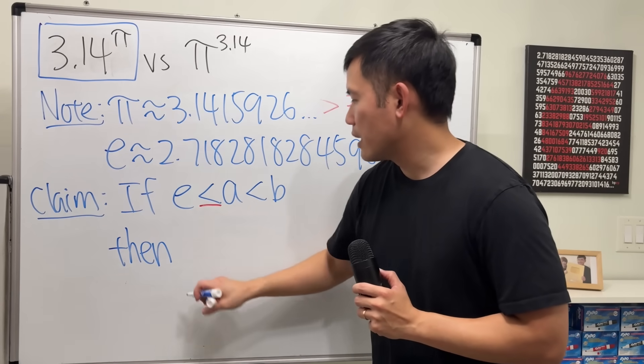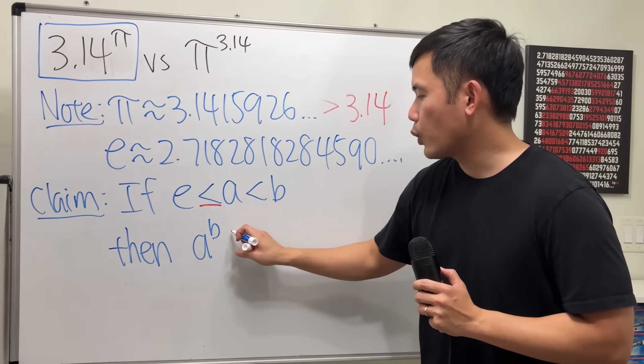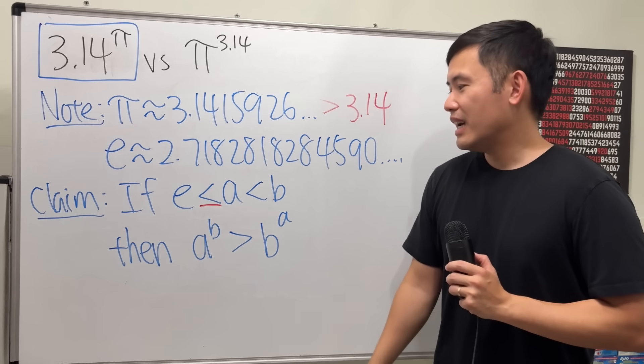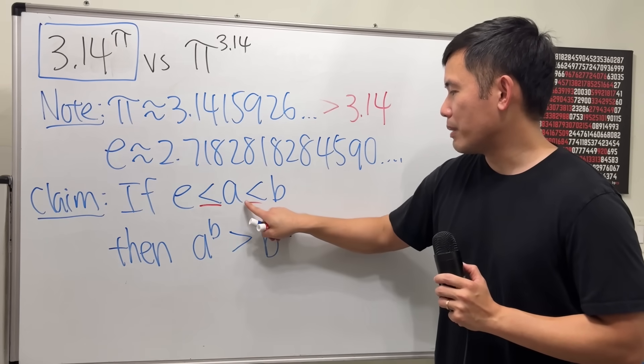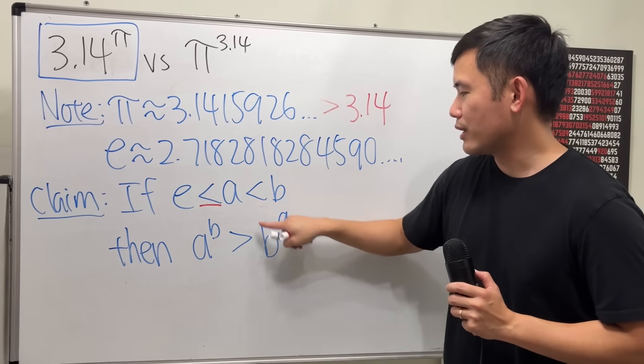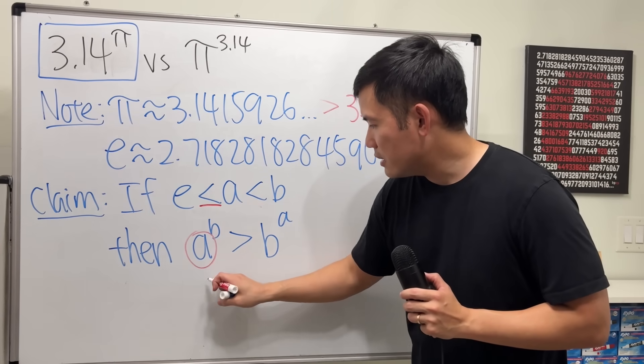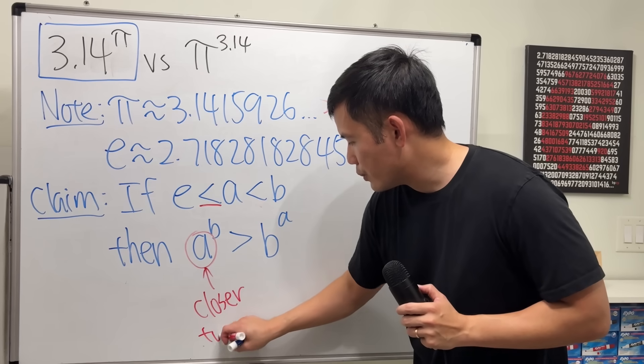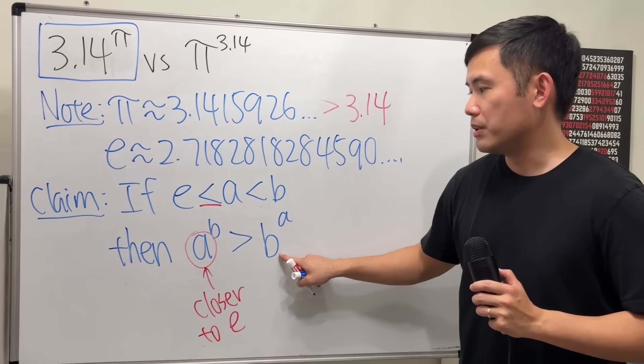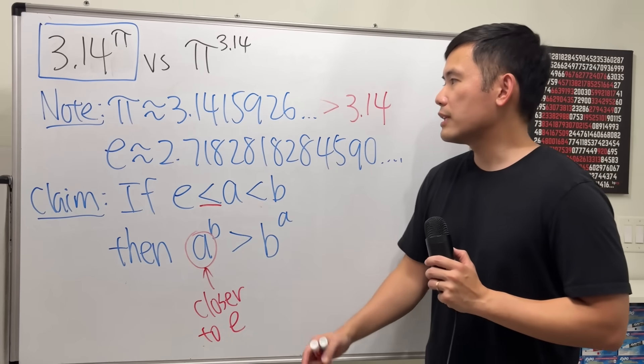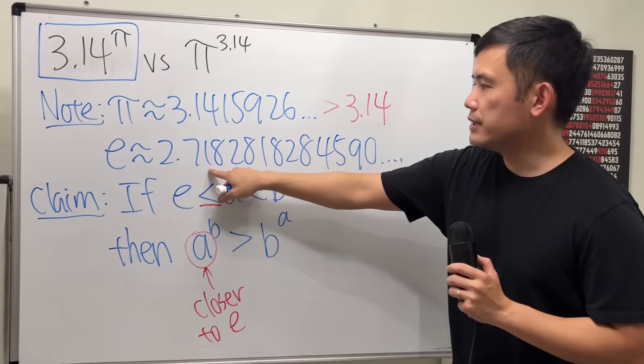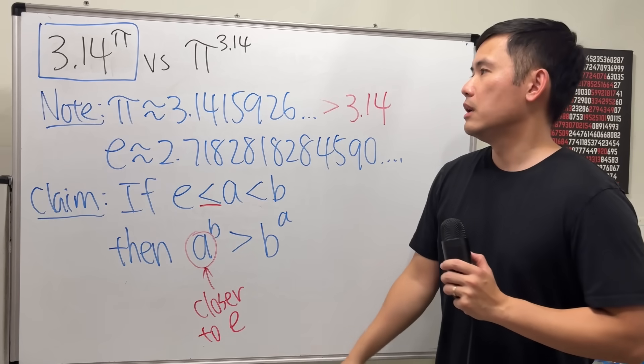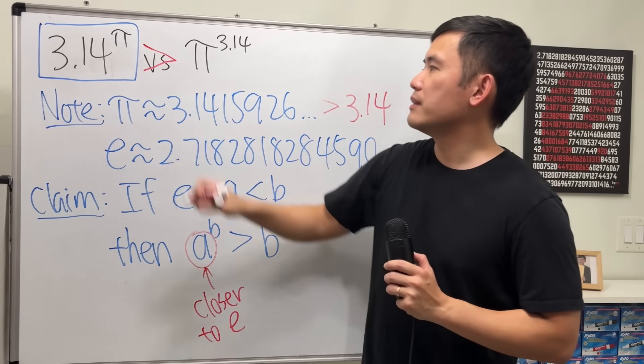Then, I will tell you, a to the b power will be greater than b to the a power. Just like that. And of course, if they are all equal, then they are all equal, but that's kind of redundant. Notice that the base a is closer to e compared to this right here, because b is bigger than a. So that's why I say 3.14, which is closer to this number, that's why 3.14 to the π power will be bigger than that. So this is the bigger one.